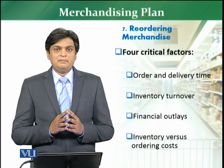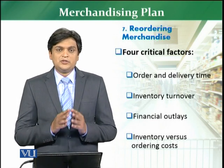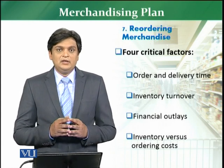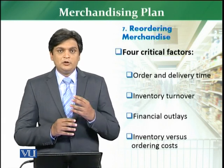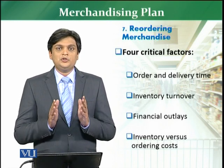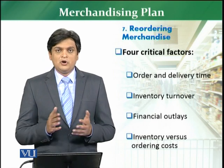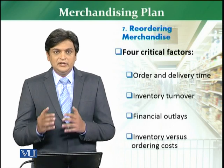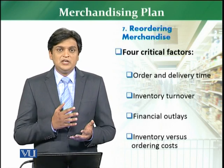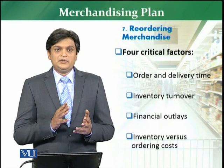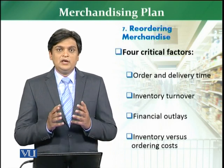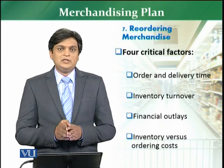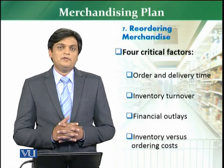The reordering merchandise mechanism has to be clearly defined because you are going to order for the second time, and the whole cycle of your store depends on your reordering level. The main parameters include order time, delivery time, order date, delivery date, inventory cost, inventory turnover, and financial outlays. They are all included and discussed in the agreements, and the objective of the retailer is to win all these points in favor of the retailer.